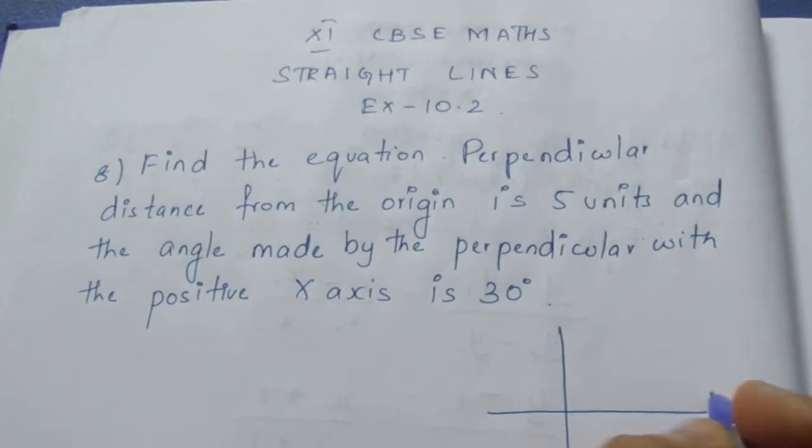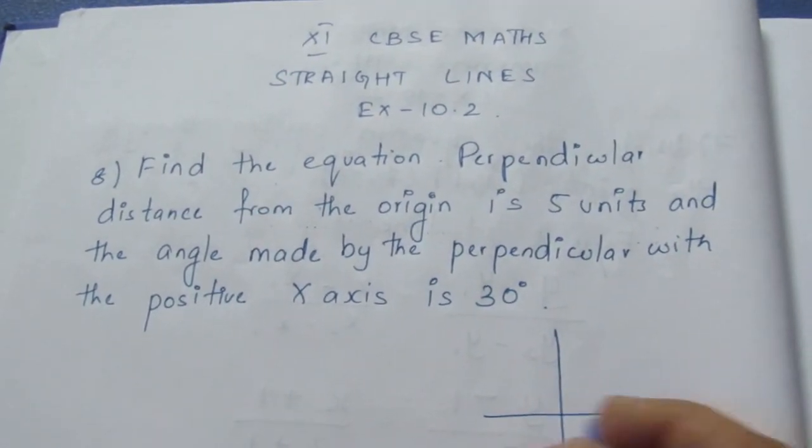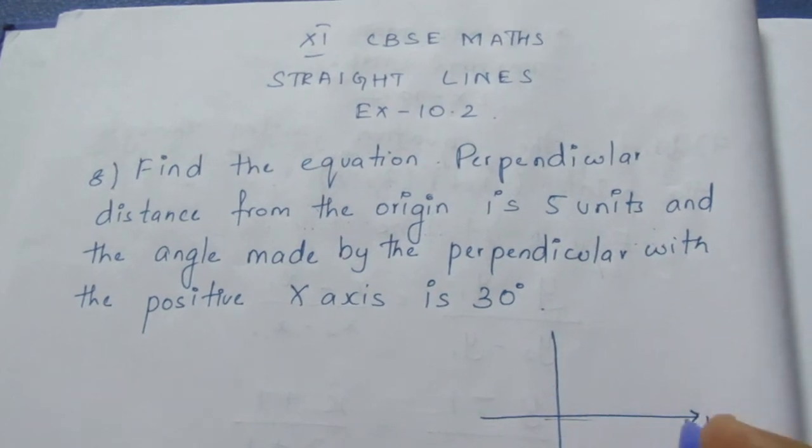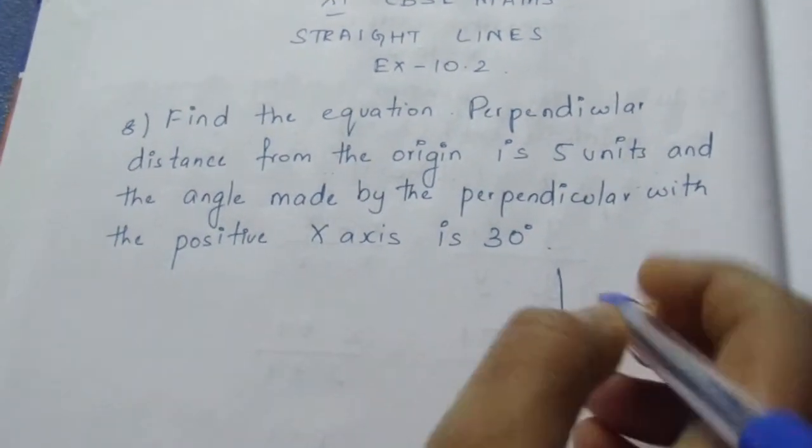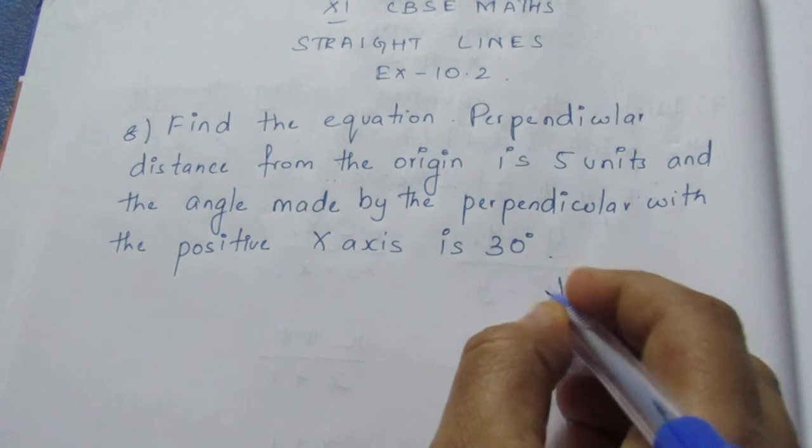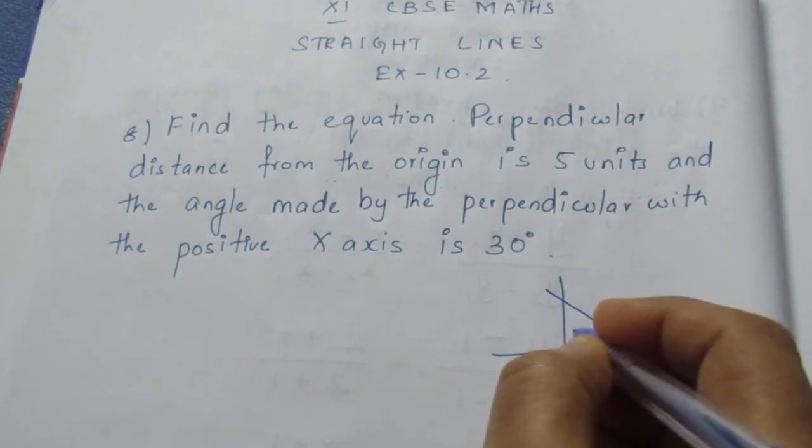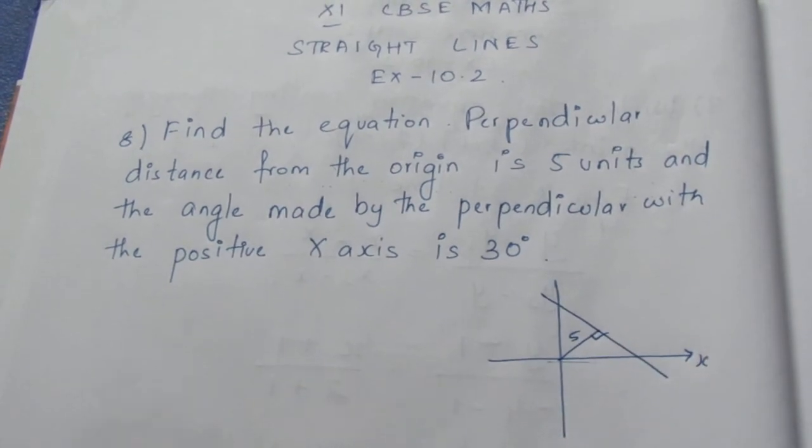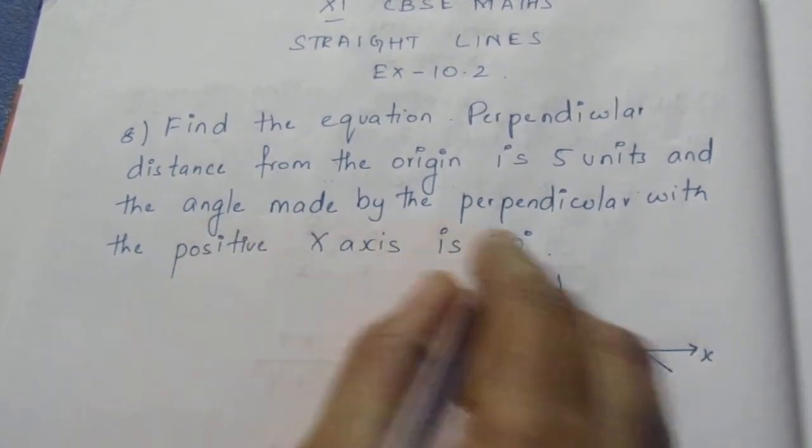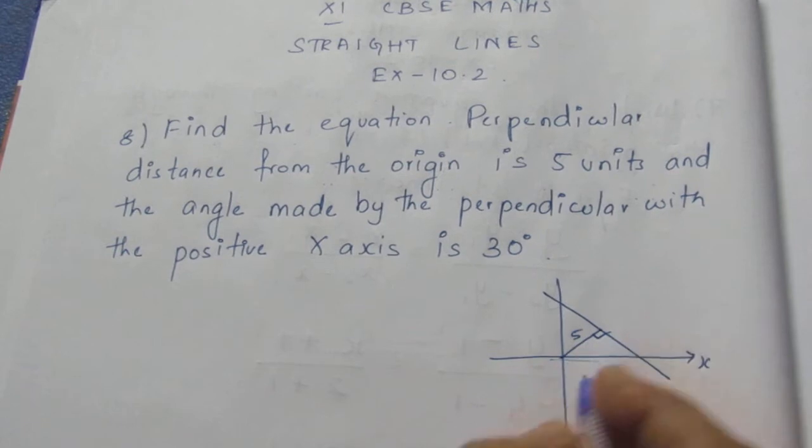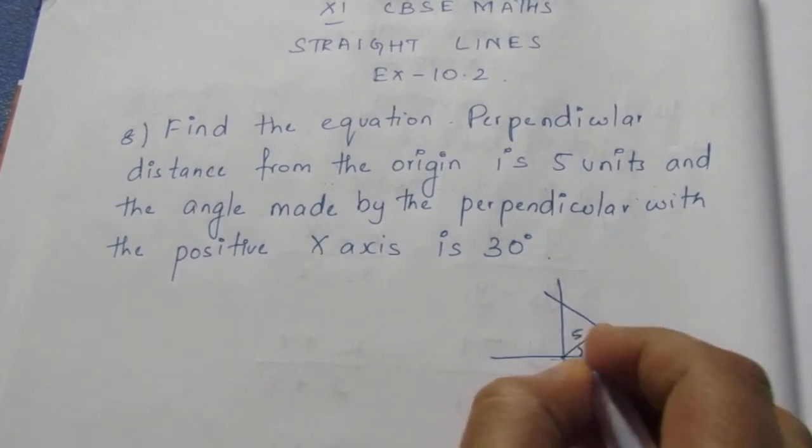Now this is your positive x-axis. So if this is a line, the perpendicular distance is 5 units and the angle made by the perpendicular with the positive x-axis is 30 degrees.